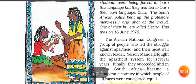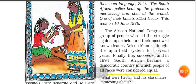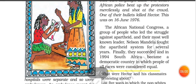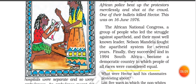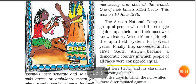The African National Congress was the group that struggled against the apartheid law. The African National Congress party, under Nelson Mandela, fought against the apartheid system and finally succeeded. In 1994, South Africa became a democratic country where all people — white, black, and colored — got equal rights.